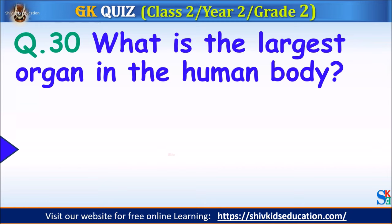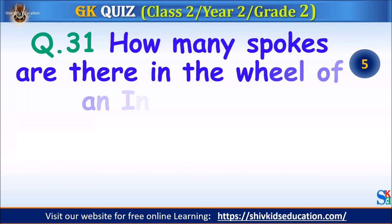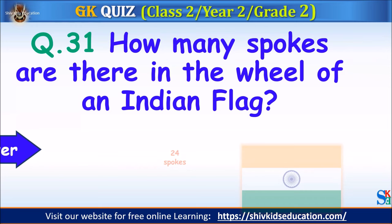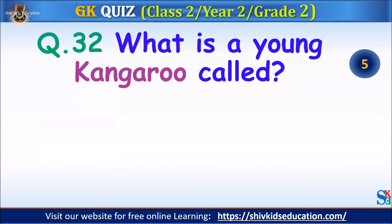Question 31: How many spokes are there in the wheel of an Indian flag? Your time starts. The answer is 24 spokes. Question 32: What is a young kangaroo called? Your time starts. The answer is a joey.